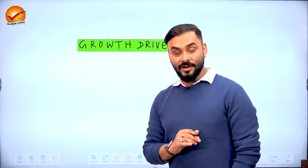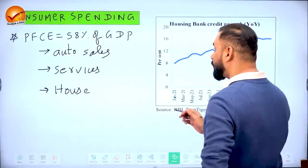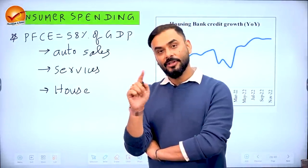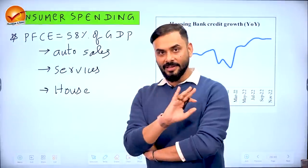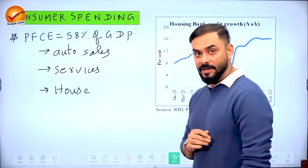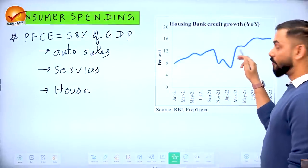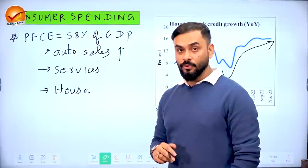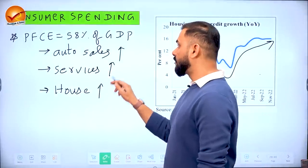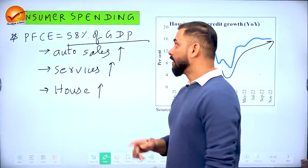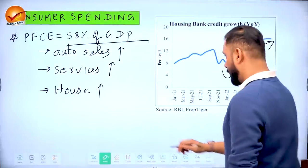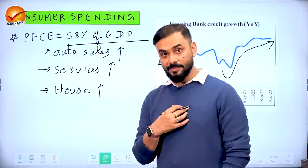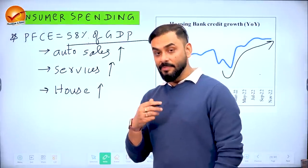Now let's look at growth drivers. The economy grows when people are ready to spend more, which encourages producers to produce more, increasing output, GDP, and jobs. Evidence shows consumers are spending: home loan demand has increased, automobile sales (two-wheelers and four-wheelers) have gone up. People are buying more services and houses. Private final consumption expenditure contributes roughly 58-60% of national income, so this is significant.